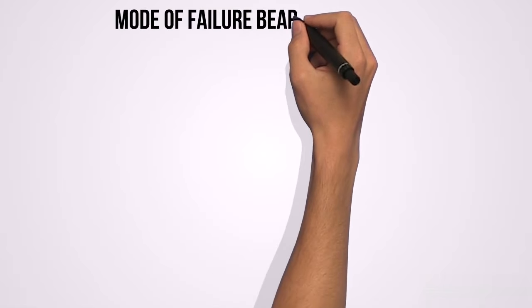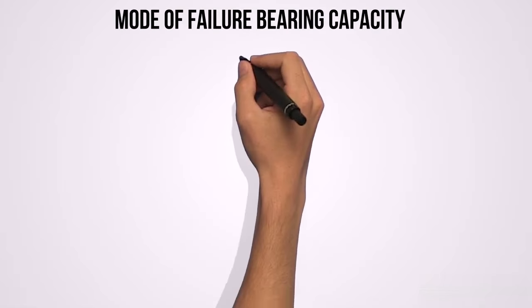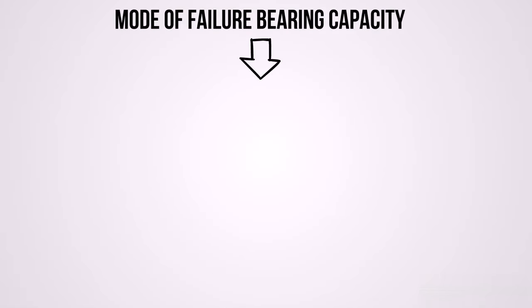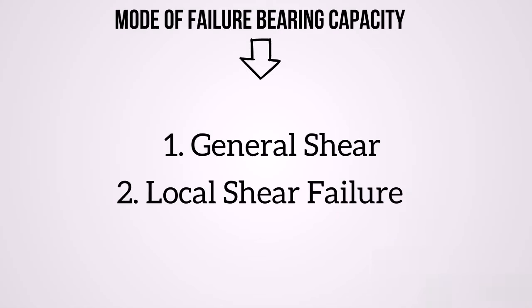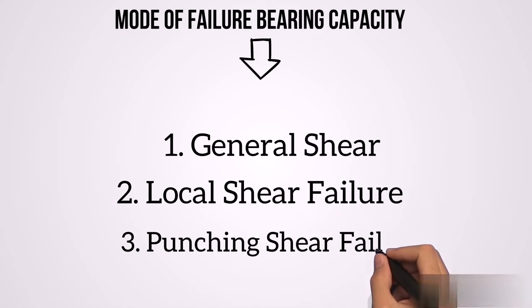There are three modes of bearing capacity failure. The first one is general shear failure. The second is local shear failure, while the third is punching shear failure.